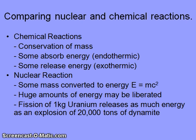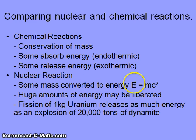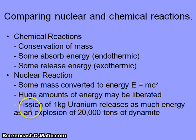In chemical reactions, mass is conserved. Some reactions absorb energy — endothermic reactions — while others release energy — exothermic reactions. In nuclear reactions, a small amount of mass is converted to energy, as described by Einstein's famous equation E equals MC squared. Nuclear reactions can release absolutely huge amounts of energy. For comparison, the fission of one kilogram of uranium in a nuclear bomb would release as much energy as an explosion of 20,000 tons of dynamite.